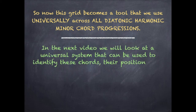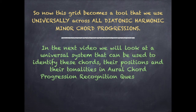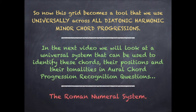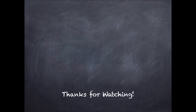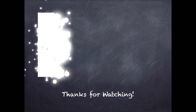In the next video, we will look at a universal system that can be used to identify these chords, their positions, and their tonalities in oral chord progression recognition questions — the Roman numeral system for harmonic minor chord progressions. Thanks for watching. I hope you found this useful. Have a great day.